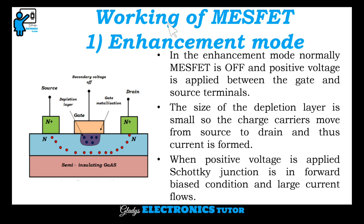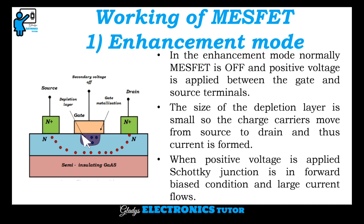About the working of MESFET — first is Enhancement Mode. In the Enhancement Mode, normally MESFET is off and a positive voltage is applied between the gate and the source terminals. The size of the depletion layer is small, so the charge carriers move from source to drain and current is formed. When the positive voltage is applied, the Schottky junction is in forward bias condition and large current flows.